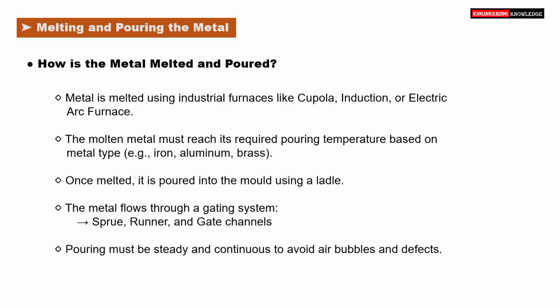The metal then flows through a gating system, which includes sprue, runner, and gate channels. Pouring must be steady and continuous to avoid air bubbles and casting defects.